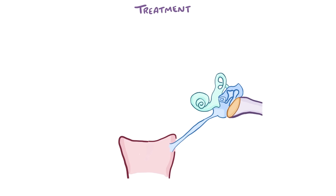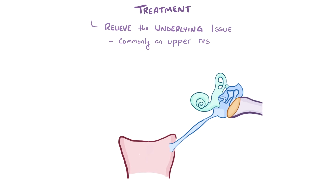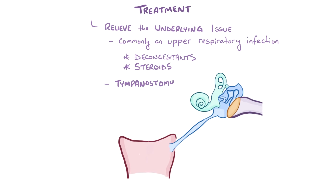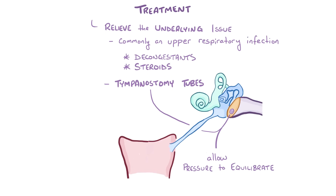Treating eustachian tube dysfunction is done by relieving the underlying issue, the most common being a simple upper respiratory viral infection or allergies, which can improve with decongestants and sometimes a short course of steroids. In some cases, tympanostomy tubes are surgically placed between the middle and outer ear, creating a direct opening between them to allow pressures to equilibrate more easily.